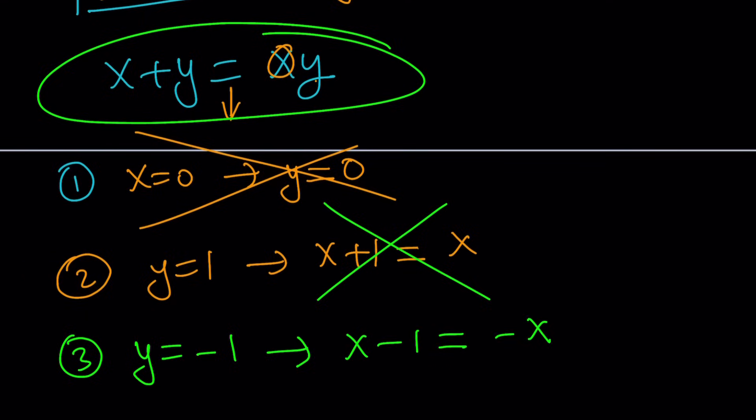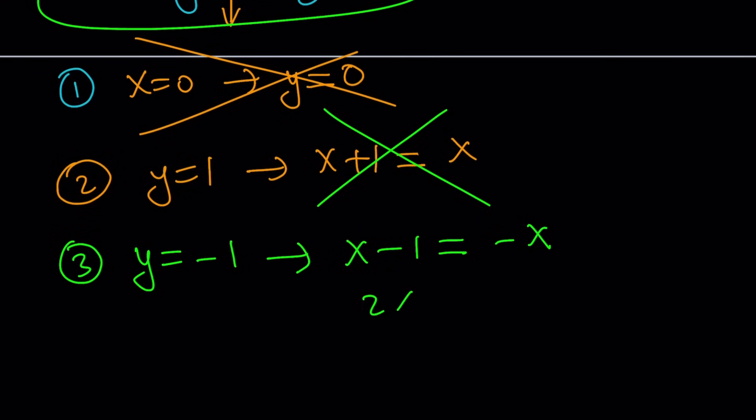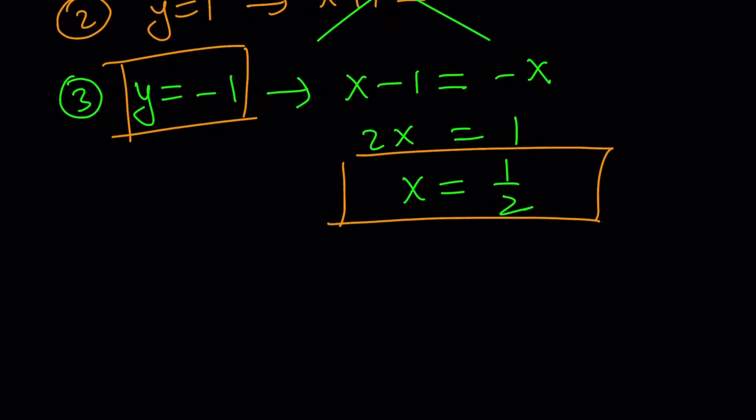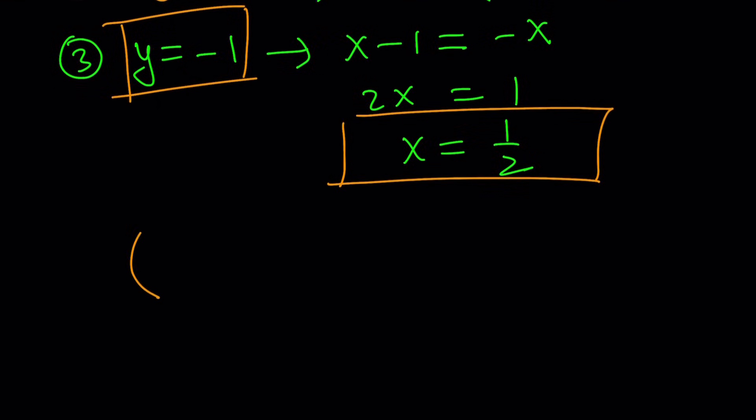Put the x on the same side and one on the right hand side. Two x equals one. That looks good to me. X equals one half. Awesome. This looks really good. So we got ourselves a solution. Yay. So what does that mean? Conclusion? We only got one solution and that solution is one half comma negative one.